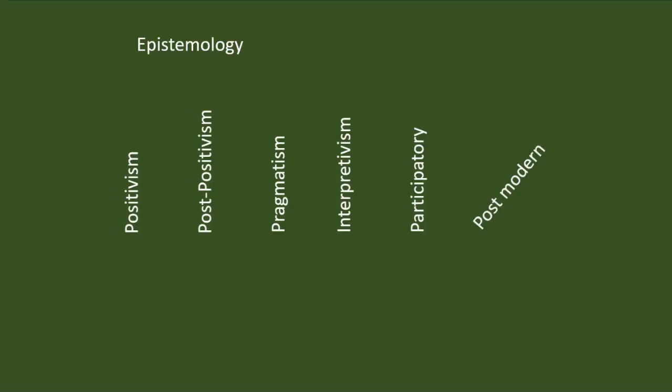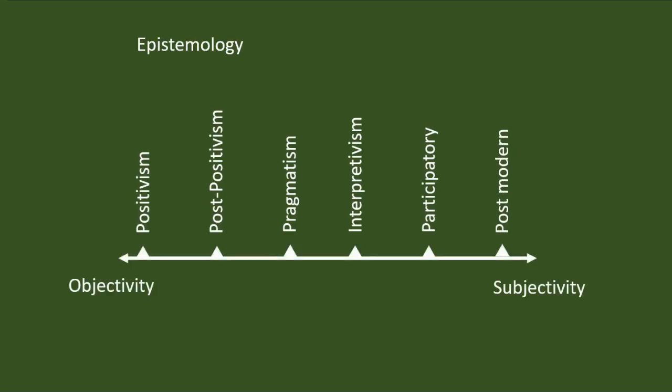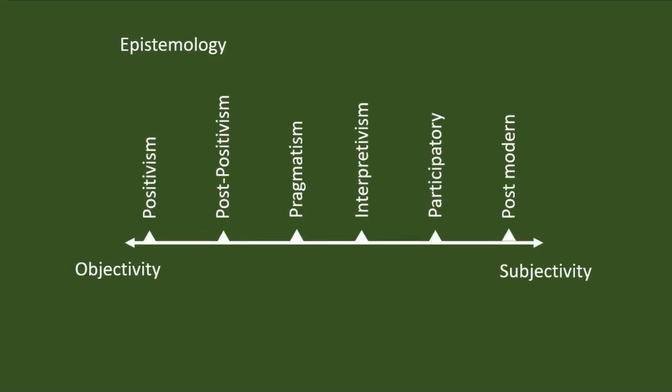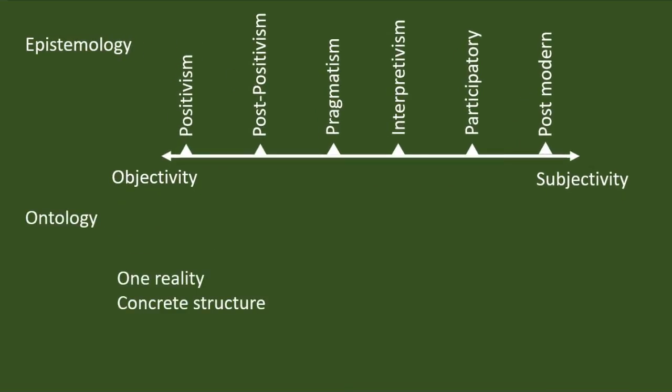We can represent each of these positions as a continuum. The assumptions of a researcher about the reality are ontology. If the researcher thinks that there is only one reality but it can never be fully studied, then she or he is in the positivistic position.